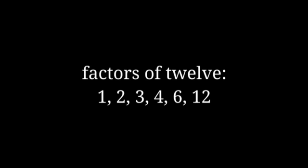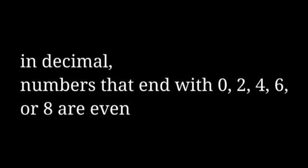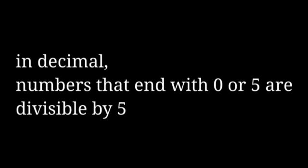In any base, you can tell what factors any given integer has in common with the base itself just by looking at the final digit. So in decimal, the last digit of any integer is enough information to tell if it's divisible by 2 and if it's divisible by 5, which are the two prime factors of 10. In dozenal however, the last digit is enough information to tell if an integer is divisible by any of the 6 factors of 12.